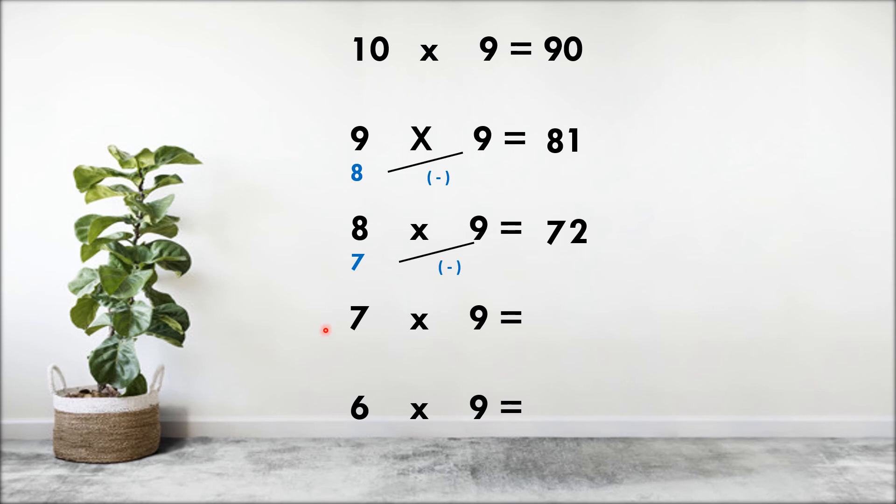Next comes 7 into 9. Predecessor of 7 is 6, 9 minus 6 is 3, so 7 nines are 63.